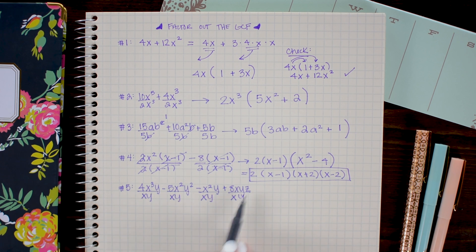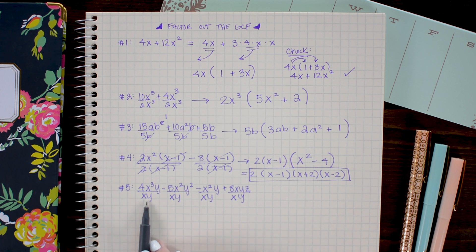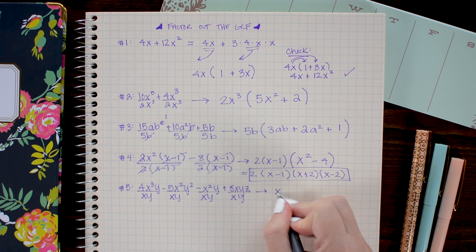And lastly on this term I have a z but none of these other terms have z's so I can't pull that out. This means that my greatest common factor is x times y. So I'm going to start by writing that down.